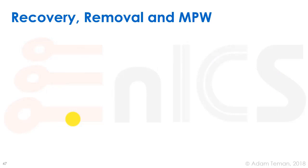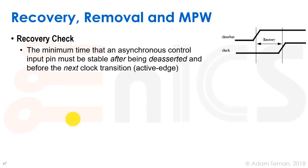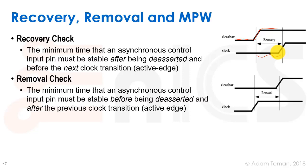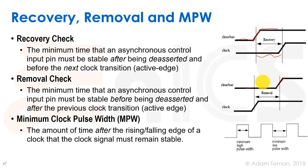Recovery and removal checks are both for asynchronous reset signals. Recovery is defined as the minimum time an asynchronous signal input pin must be stable after being de-asserted and before the next clock transition — that is, after coming out of reset, this is the amount of time we must be clear before raising the clock. A removal check is the minimum time the asynchronous signal input pin must be stable before being de-asserted and after the previous clock transition. These two checks are verified by timing engines but we don't run into problems with them as often as with max and min delays.